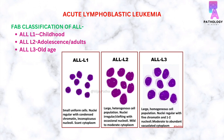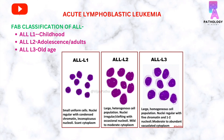According to the FAB classification, there are three subtypes of acute lymphoblastic leukemia: L1, L2, and L3. L1 lymphoblastic leukemia commonly occurs in childhood, and in this the blast cytomorphology shows small uniform cells with regular nuclei, coarse chromatin, inconspicuous nucleoli, and scant cytoplasm. The L2 subtype occurs mainly in adolescence or adults, and in this the blasts are a large heterogeneous cell population with irregular or clefted nuclei and occasional nucleoli.